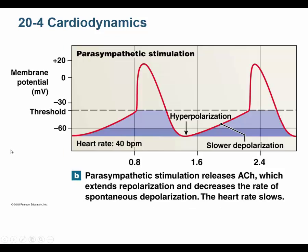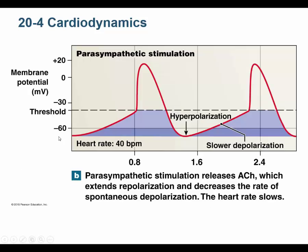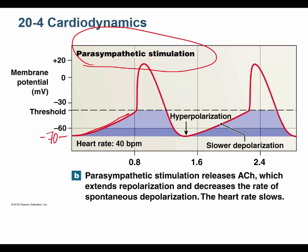The parasympathetic nervous system hyperpolarizes the membrane — say down to negative 70 mV. That's more polarized than negative 60, so it takes more time to reach threshold, slowing the heart. The neurotransmitter responsible for this is acetylcholine.